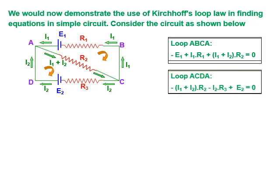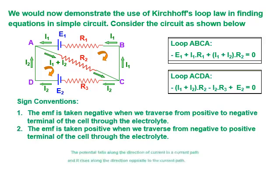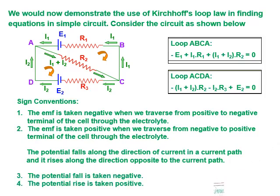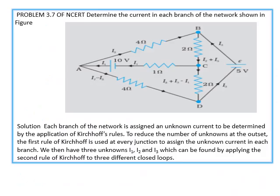Now consider the second loop and apply the same rule to get another equation. Note down the sign conventions, and remember the path can be traversed clockwise or anticlockwise, but keep the same direction throughout one problem. Let's discuss the numerical problem 3.7 from your NCERT textbook. You have to find out the current in each branch of the network shown, by finding equations using the junction law and the loop law, then solving them.